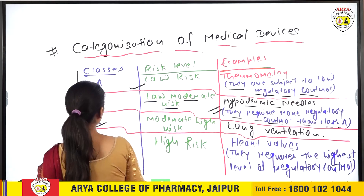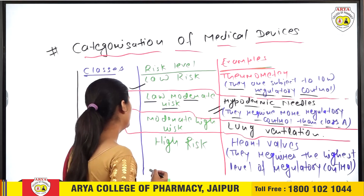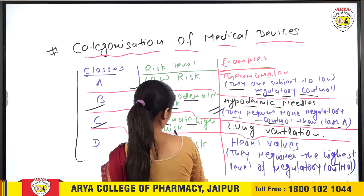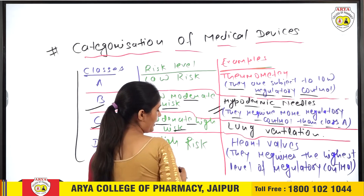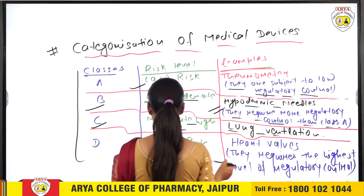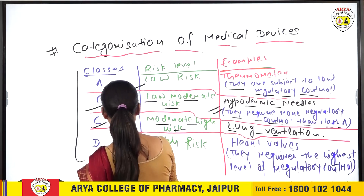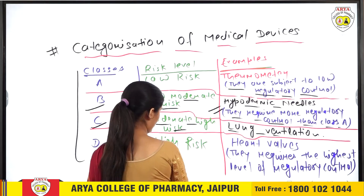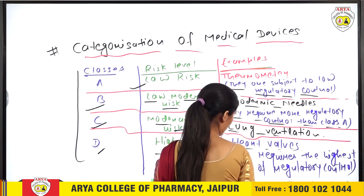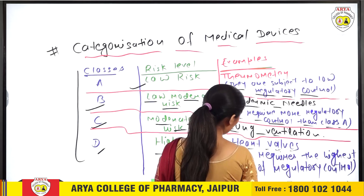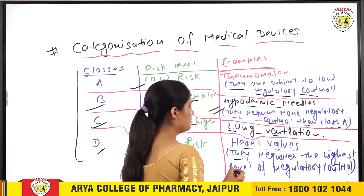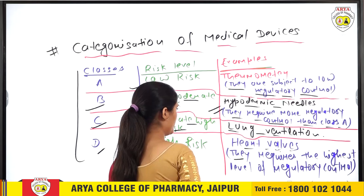Next is class C, which is moderate to high risk, and their example is lung ventilation. Next is class D, which is high risk, and their example is heart valves. They require the highest level of regulatory control.